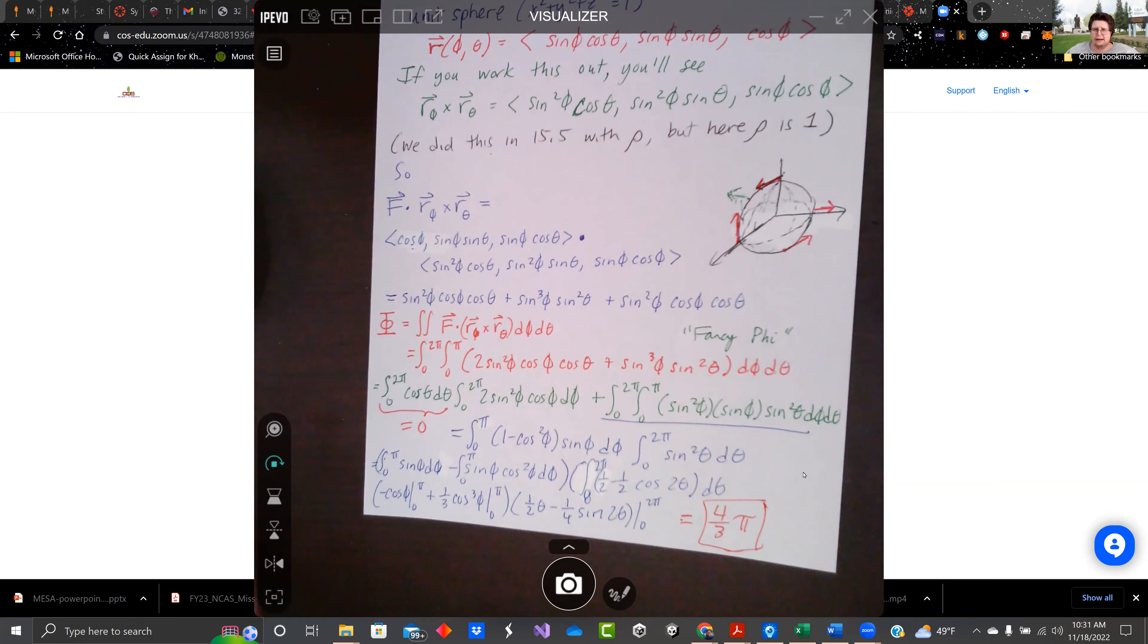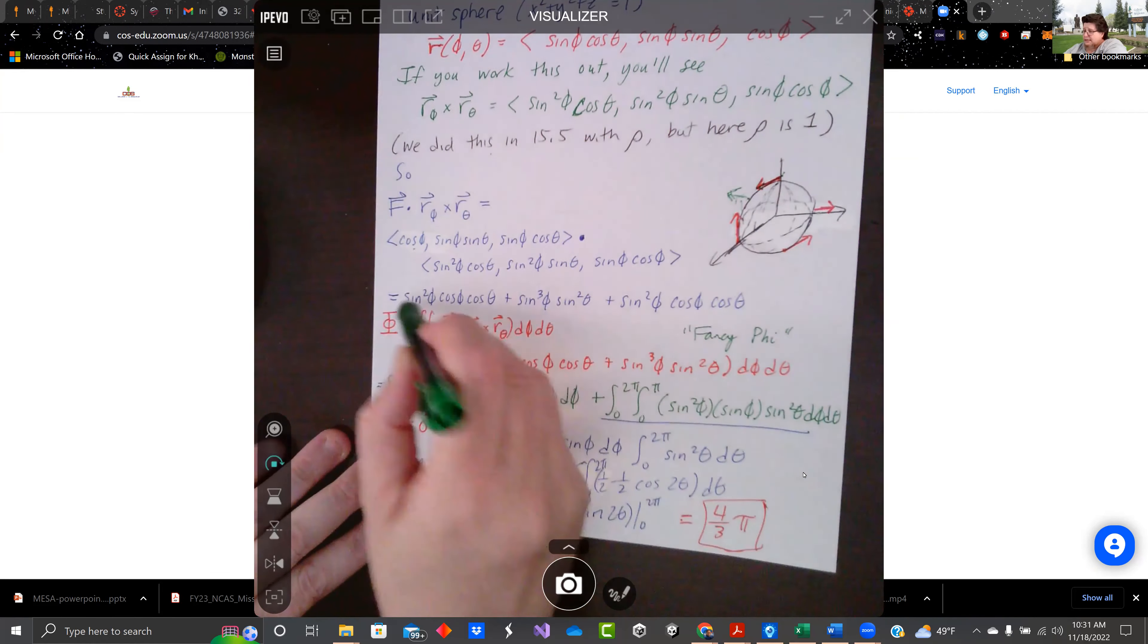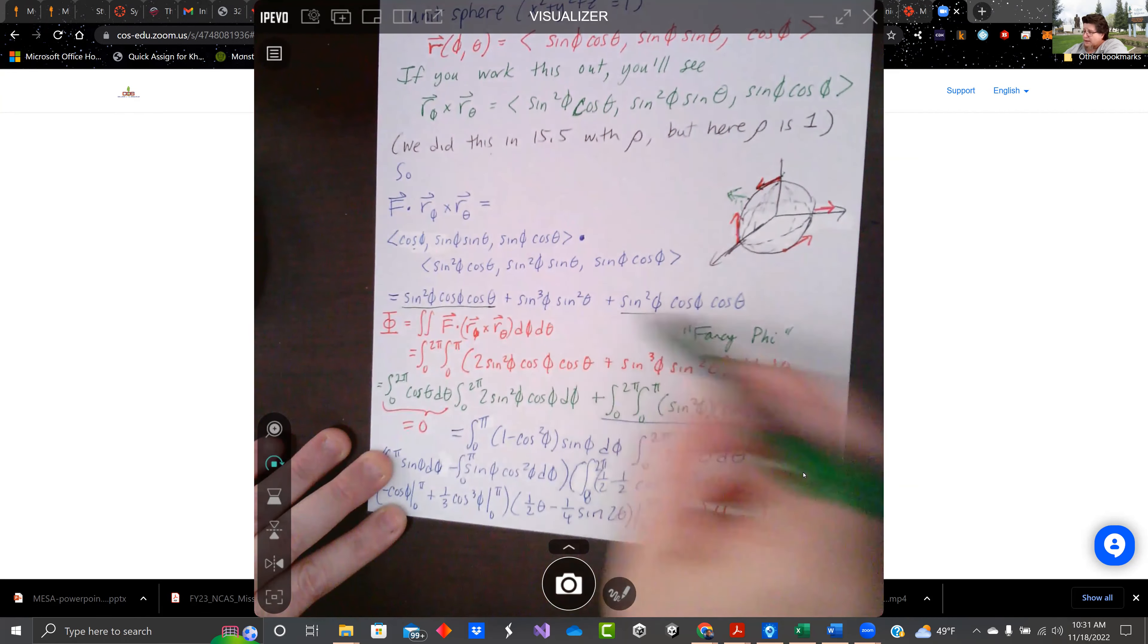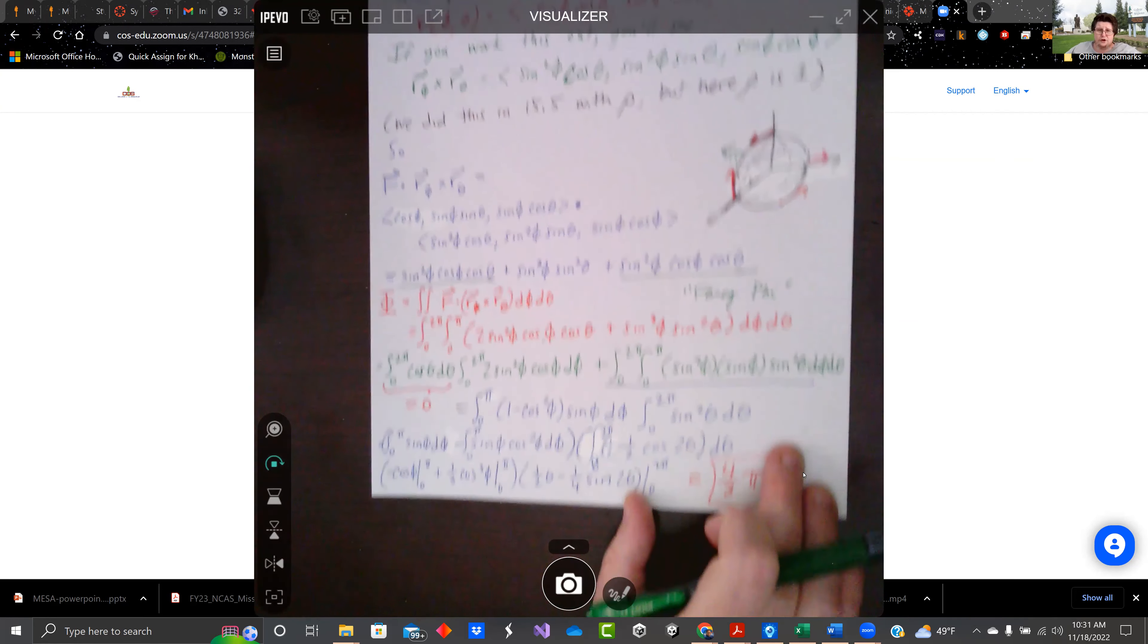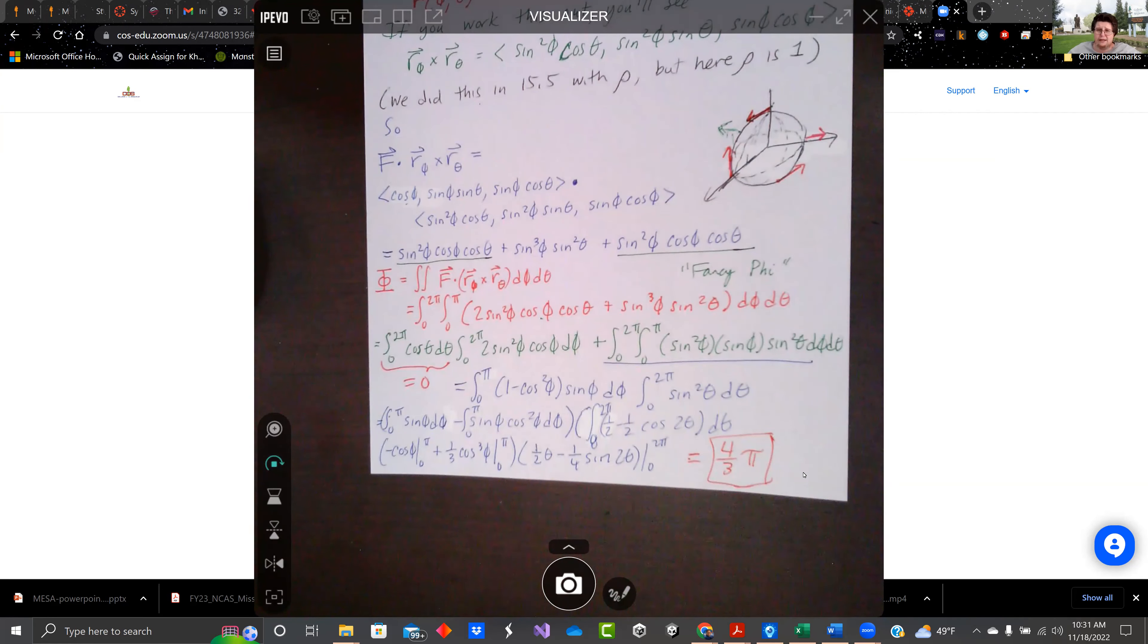So I've got it written out. We're going 0 to 2 pi for theta, 0 to pi for phi. I did combine like terms. There was two of these, so I added them together. And if you go through and do the integral, you're going to find that you get 4 thirds pi. Pause the video and confirm the math that you get the same math I do.